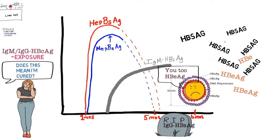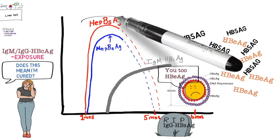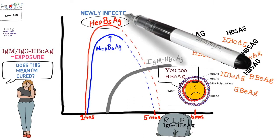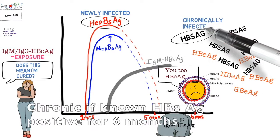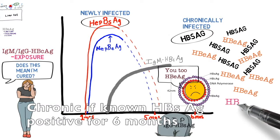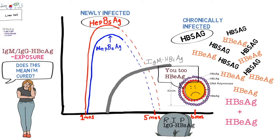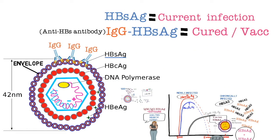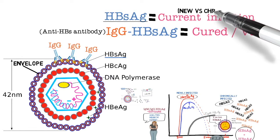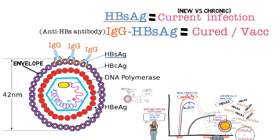In chronic infection, hepatitis B surface antigen is actively being produced, as well as hepatitis B E antigen, usually during an actively replicating phase. So if we see hepatitis B surface antigen, the patient is either newly infected or chronically infected — we don't know which yet, but we do know they have a current infection. Hepatitis B surface antigen plus hepatitis B E antigen together indicate active replication.